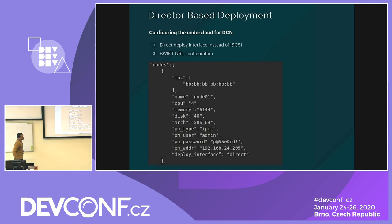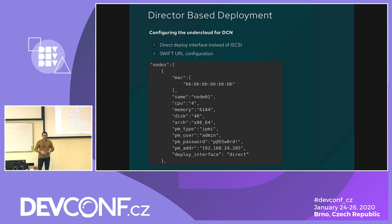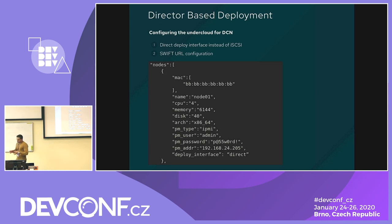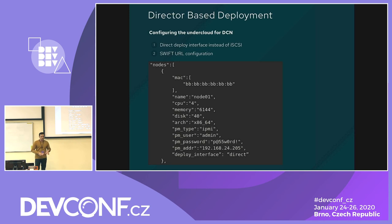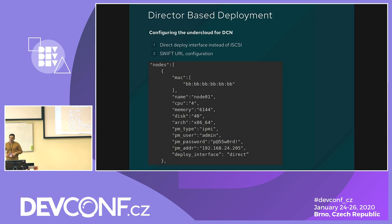For deploying OpenStack, there are multiple deployment methods. We are considering the director-based deployment method, which uses YAML files. YAML files define what things you need to deploy — what kind of network you want, what kind of services you need in your OpenStack environment. As I mentioned earlier, OpenStack has two parts: undercloud and overcloud. Here is a snippet of the JSON file showing the changes needed on the undercloud node.